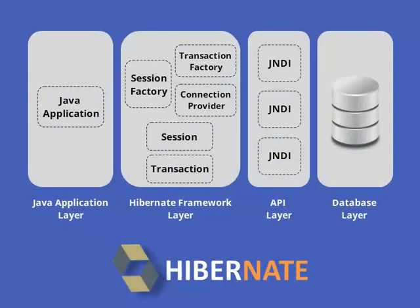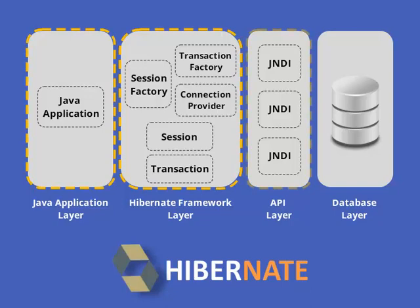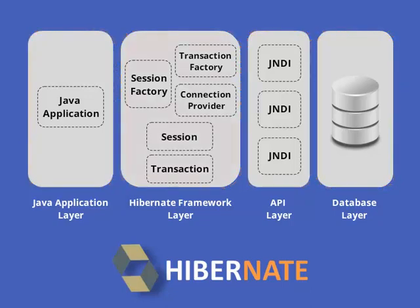There are four layers in Hibernate architecture: the Java application layer, the Hibernate framework layer, the backend API layer, and the database layer. The Hibernate architecture includes persistent objects such as session factory, transaction factory, connection provider, connection factory, session, transaction, and more.